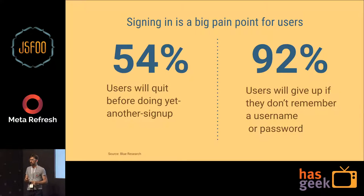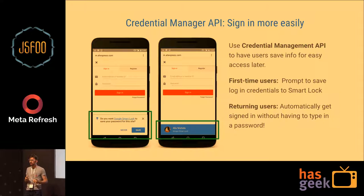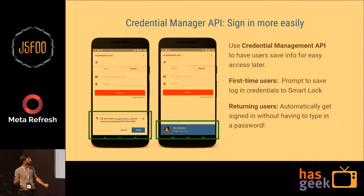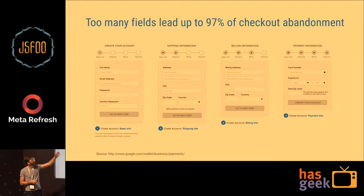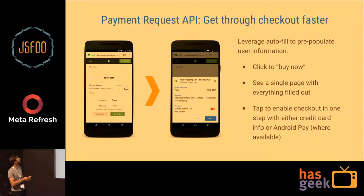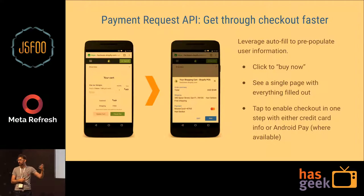The latest problems we're solving: signing in is a huge pain point — 54% of users quit before doing yet another sign-up, and 92% give up if they don't remember their username or password. That's why we built the Credential Manager API, which saves info for easy access later and can automatically sign returning users in without them ever seeing a login form. For checkout, if you have too many steps on mobile — filling out forms, entering credit card details — conversion suffers. The solution is the Payment Request API: in the best case, a one-click scenario for enabling payments on phones.